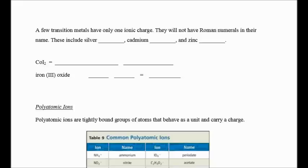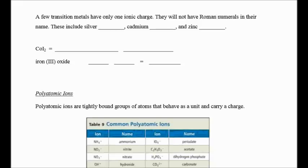If a transition metal only has one charge, it will not have a Roman numeral. This includes silver, which is Ag+, cadmium, Cd2+, and zinc, Zn2+. So if that is a formula that we're writing the name for, we would not say zinc Roman numeral II, because there's only one positive ion.